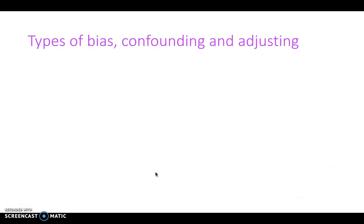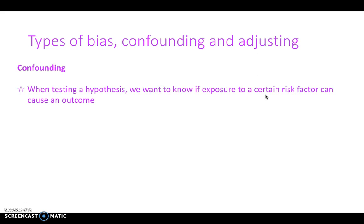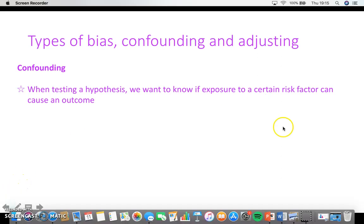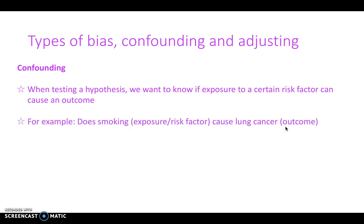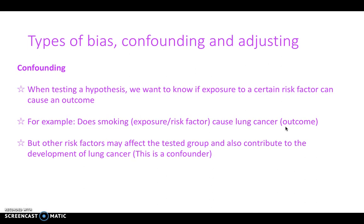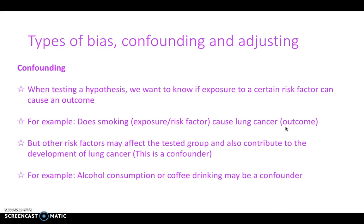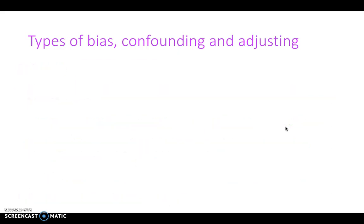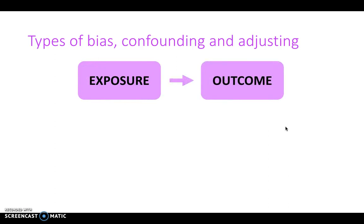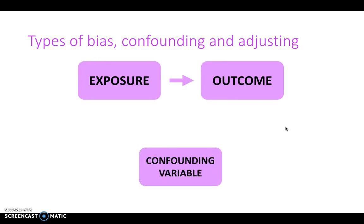Next, we look at bias, confounding, and adjusting, applicable to the study designs discussed in the first video. When testing a hypothesis, we want to know if it's the exposure or risk factor that causes the outcome — for example, does smoking cause lung cancer? We also need to ask whether anything else in the tested group may cause lung cancer or link to both the exposure and outcome. For instance, alcohol consumption or coffee drinking may be a confounder. This is summarised in a three-step diagram: the exposure causes the outcome, but a confounding variable can skew the results and affect whether the exposure directly links to the outcome.